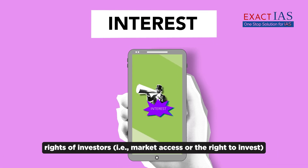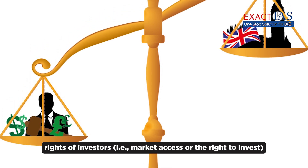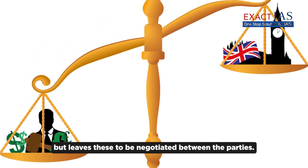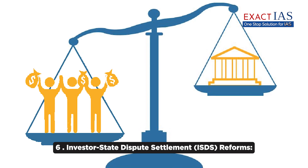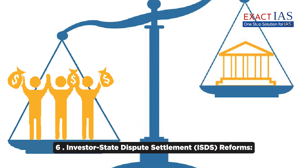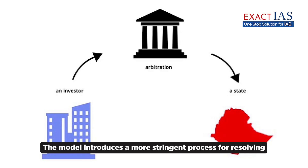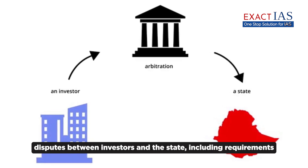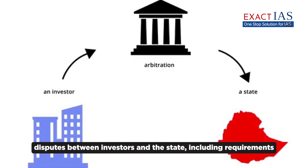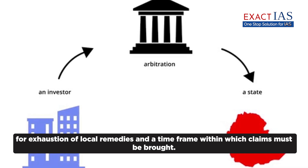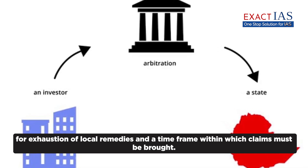Feature five: pre-establishment commitments subject to negotiation. The model does not automatically allow for the pre-establishment rights of investors — that is, market access or right to invest — but leaves these to be negotiated between the parties. Feature six: investor-state dispute settlement reforms. The model introduces a more stringent process for resolving disputes between investors and the state, including requirements for exhaustion of local remedies and a time frame within which claims must be brought.